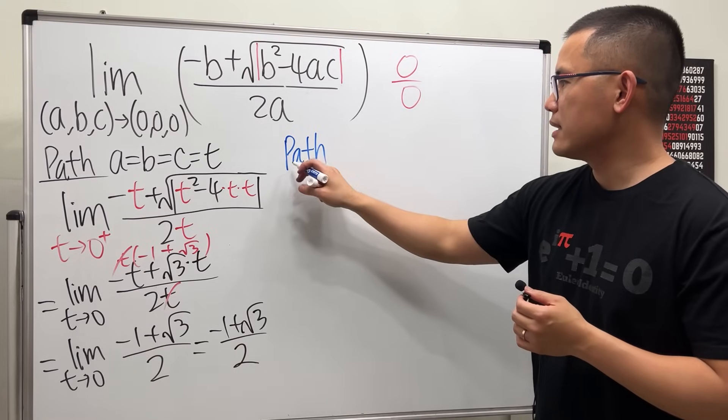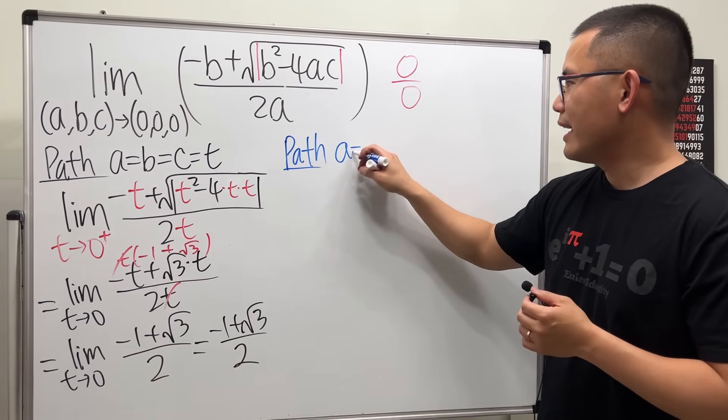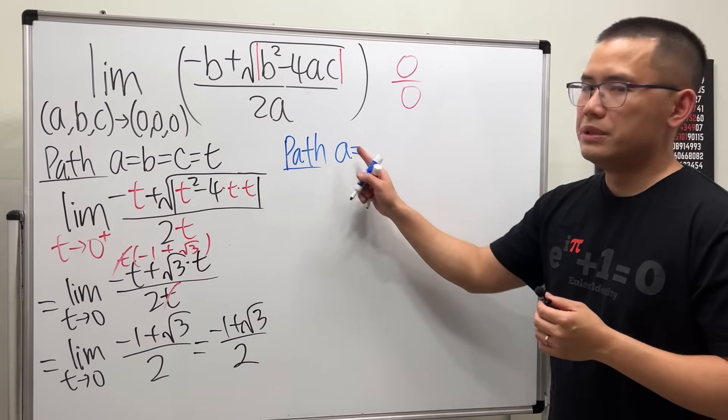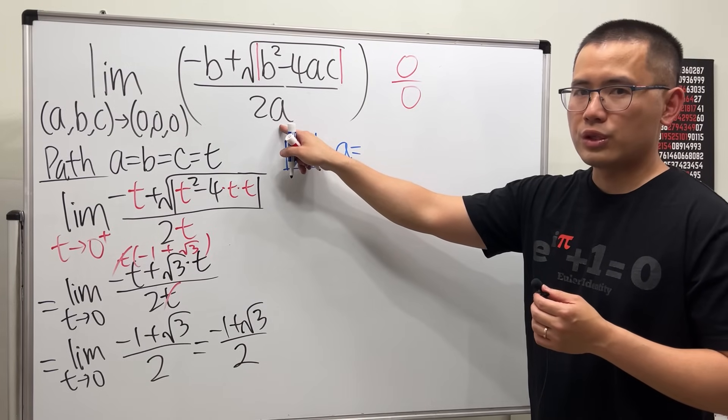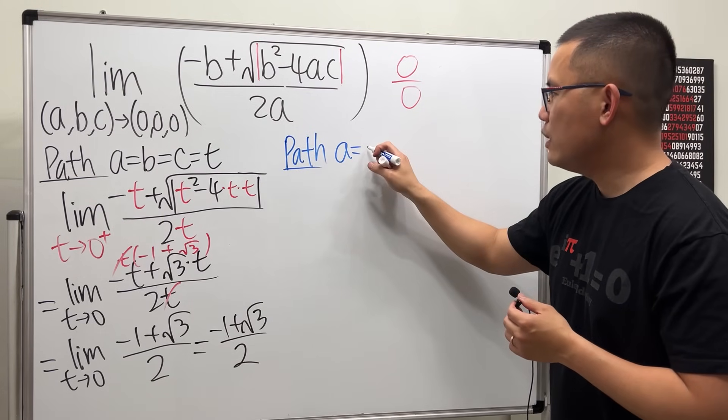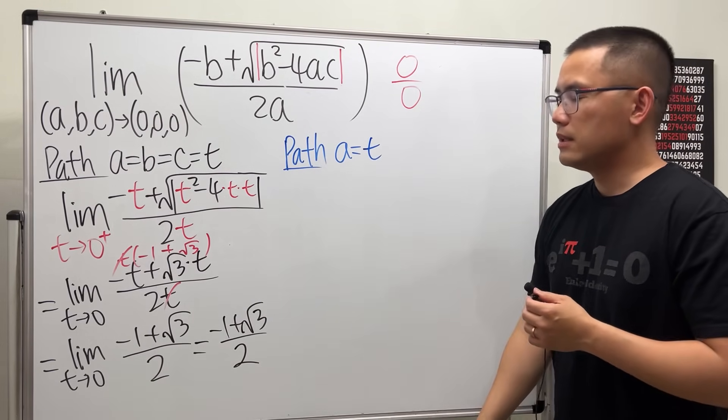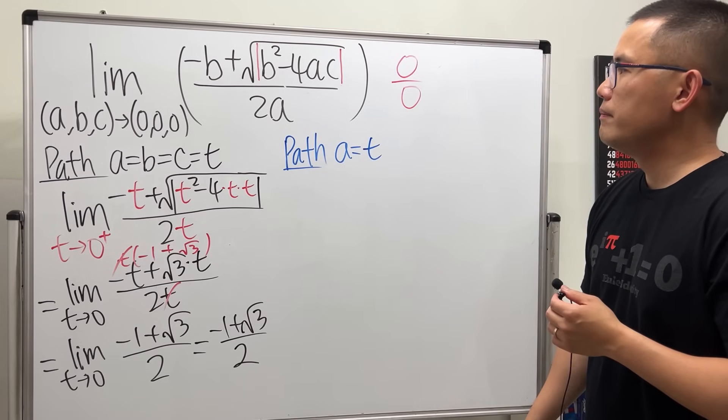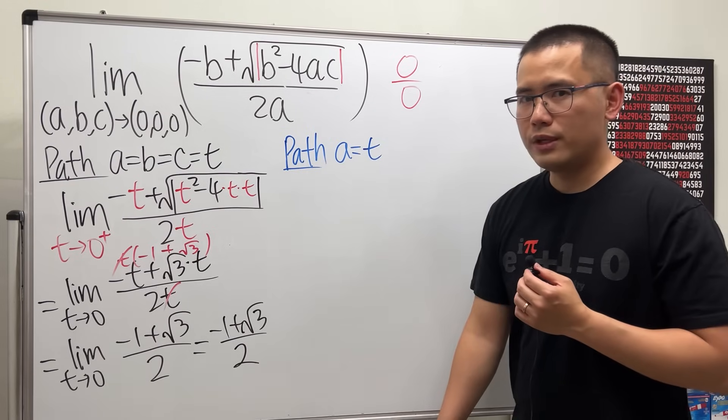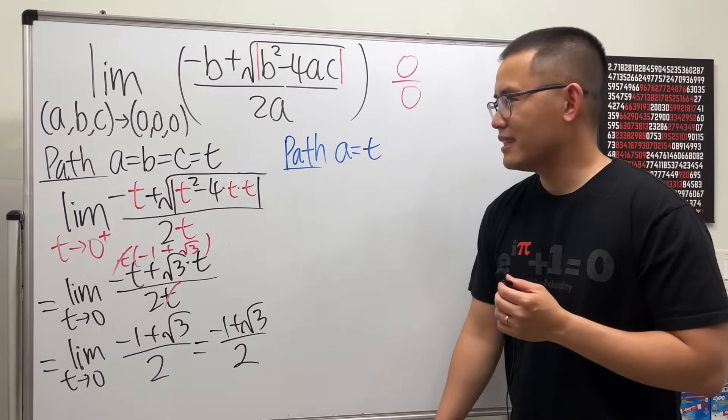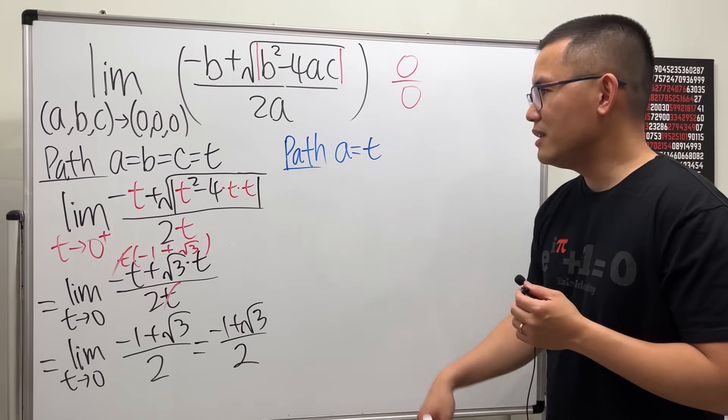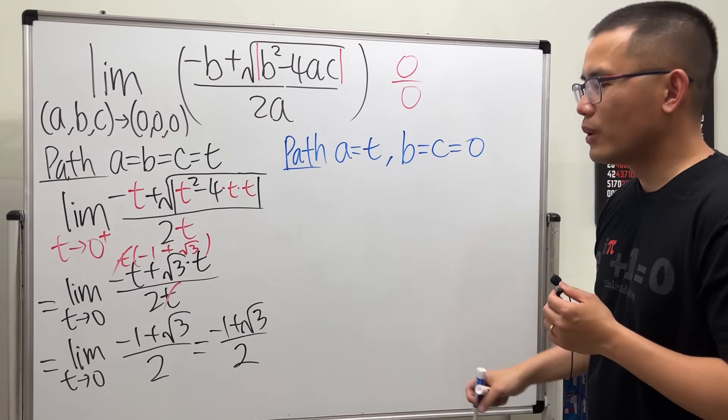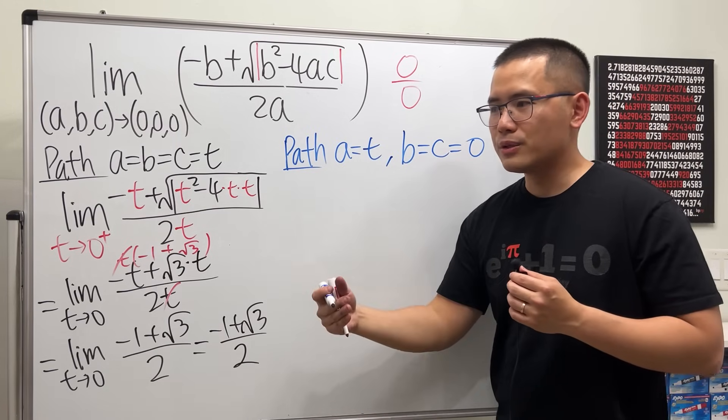And shouldn't be too bad. I forgot the one that I used when I was doing this on my own. I don't want a to be zero, otherwise I ruined the quadratic formula right away. So I still want a to be t. And maybe we'll just put the rest to be zero. Why, why not? I said a is equal to t, and then b is equal to c, it's equal to zero, along the b axis and also the c axis.